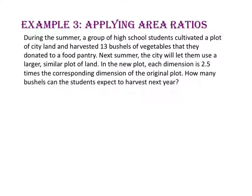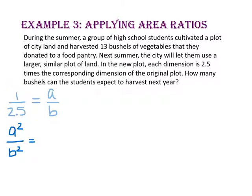In example 3, we will apply area ratios. During the summer, a group of high school students cultivated a plot of city land and harvested 13 bushels of vegetables that they donated to a food pantry. Next summer, the city will let them use a larger, similar plot of land where each dimension is 2.5 times the corresponding dimension of the original plot. How many bushels can the students expect to harvest next year? Since each dimension is 2.5 times larger, our scale factor will be 1 to 2.5, or A to B. The ratio of areas is A squared to B squared: 1 squared to 2.5 squared, or 1 to 6.25.